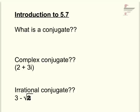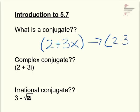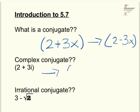First, remind yourself what a conjugate is — we covered this back in chapter 4. If you have a binomial like 2 plus 3x, its conjugate is 2 minus 3x. You just switch the sign of the part with the variable. For a complex conjugate, the conjugate of 2 plus 3i is 2 minus 3i — you only change the imaginary part; the positive 2 stays positive 2.